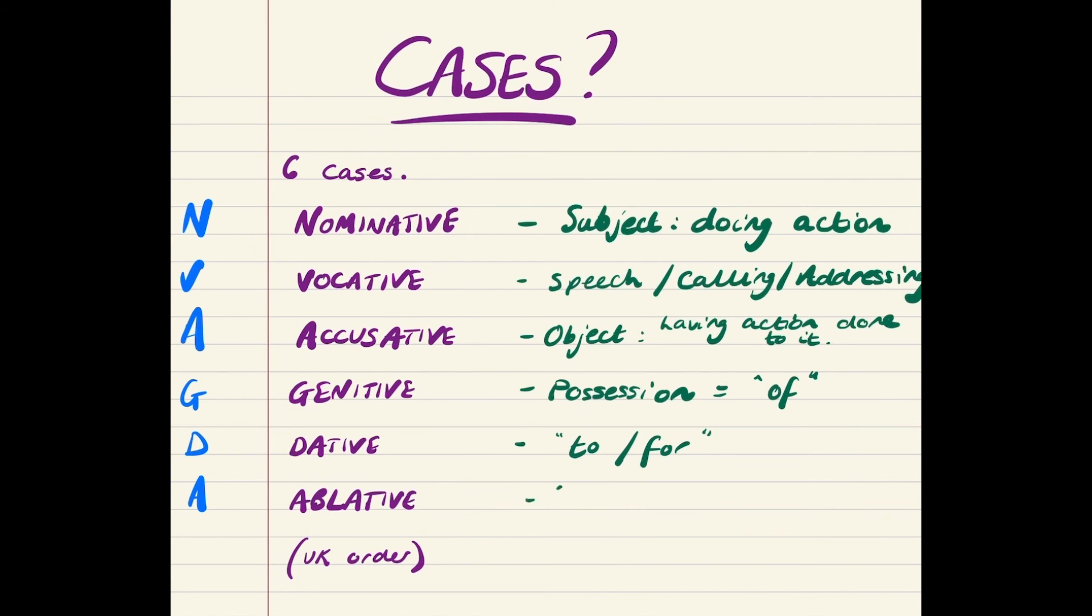And your last case is the ablative, which we translate using the words by, with, or from. So, if I kill you with a sword, the with a sword would go into the ablative.